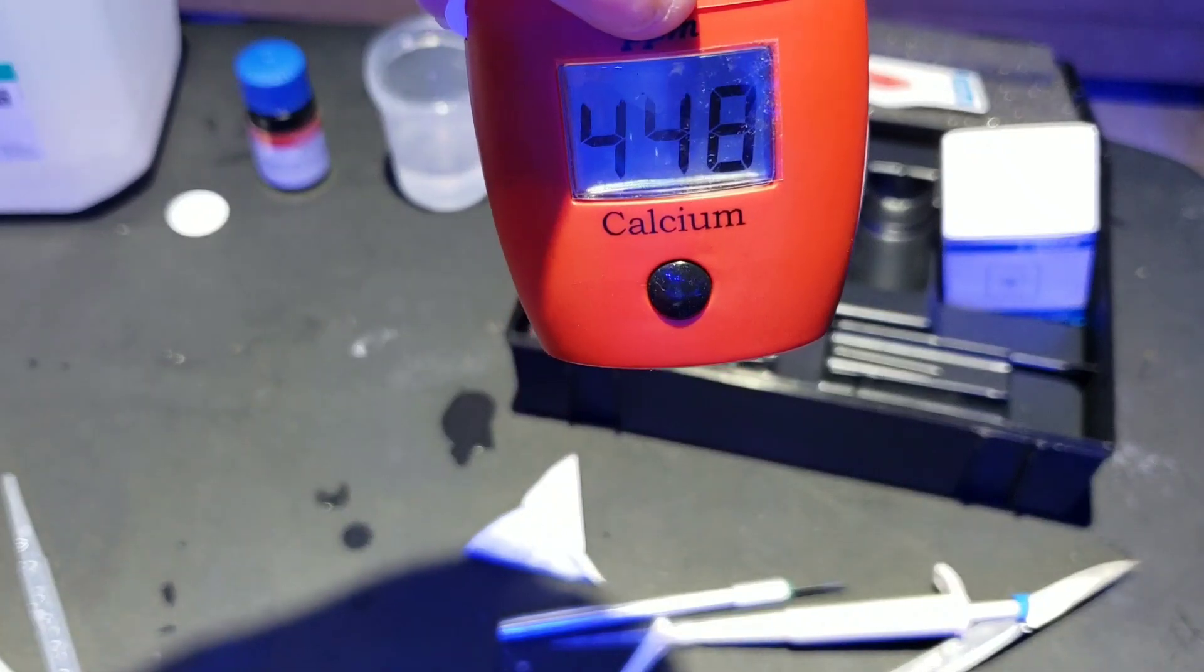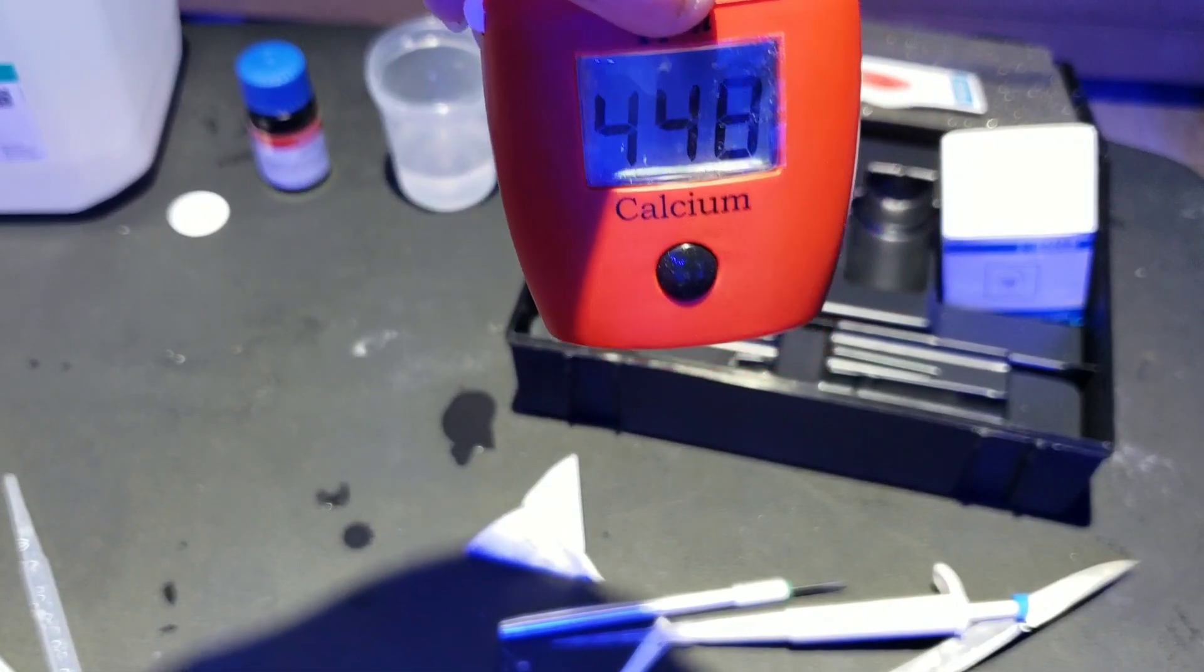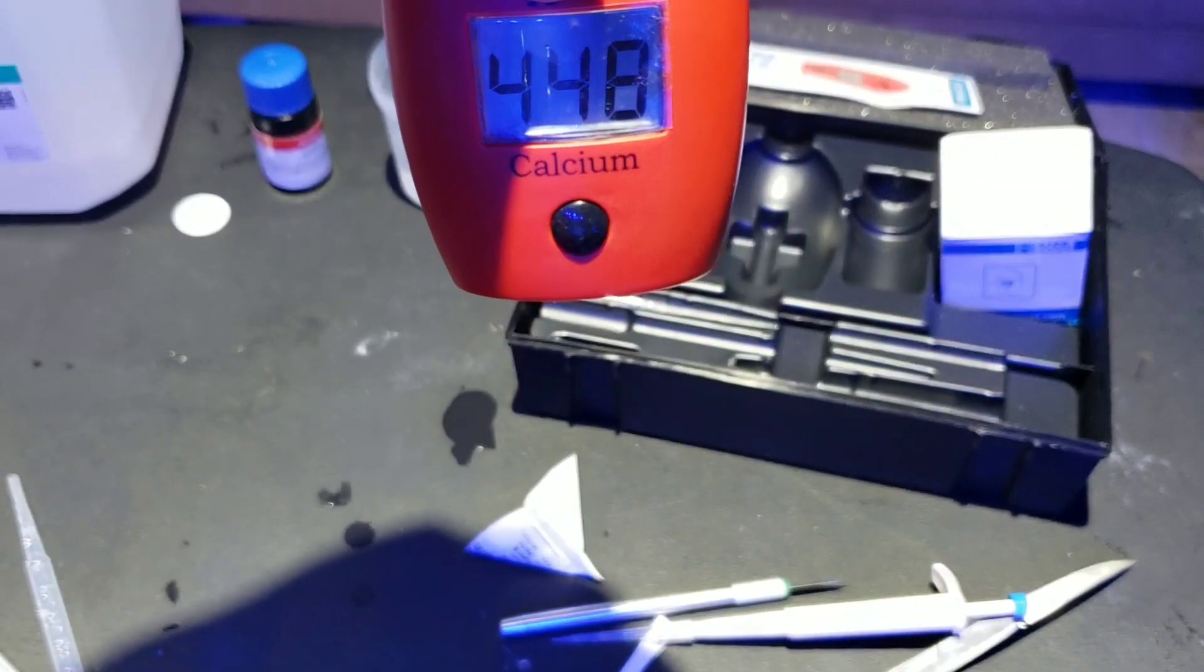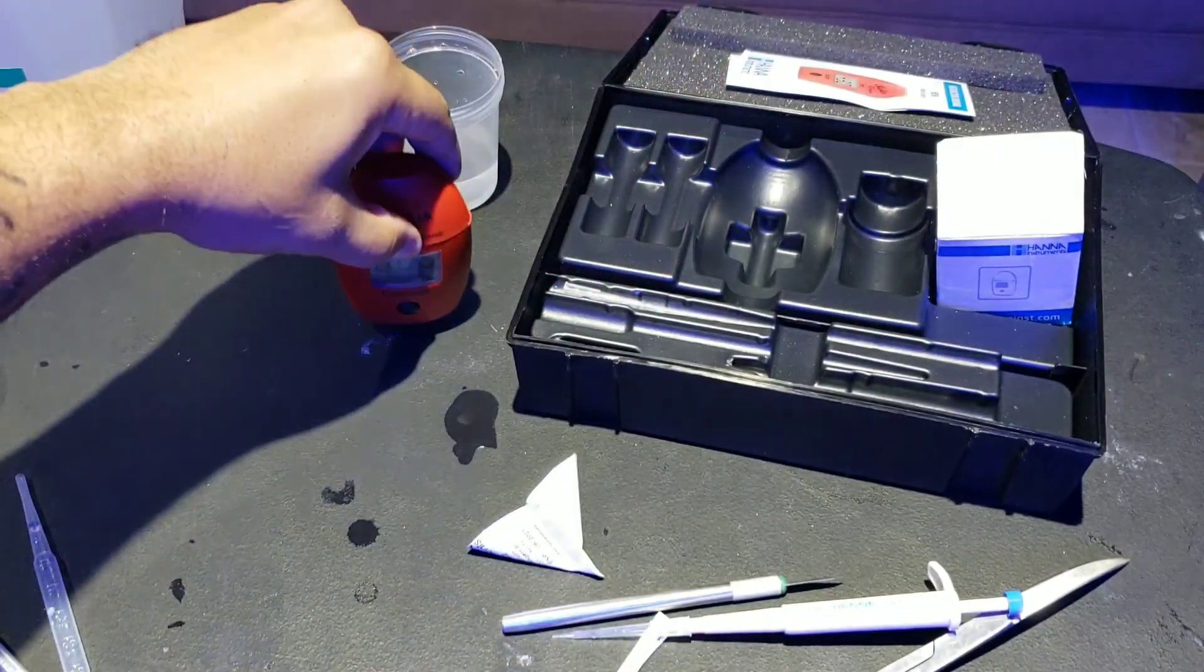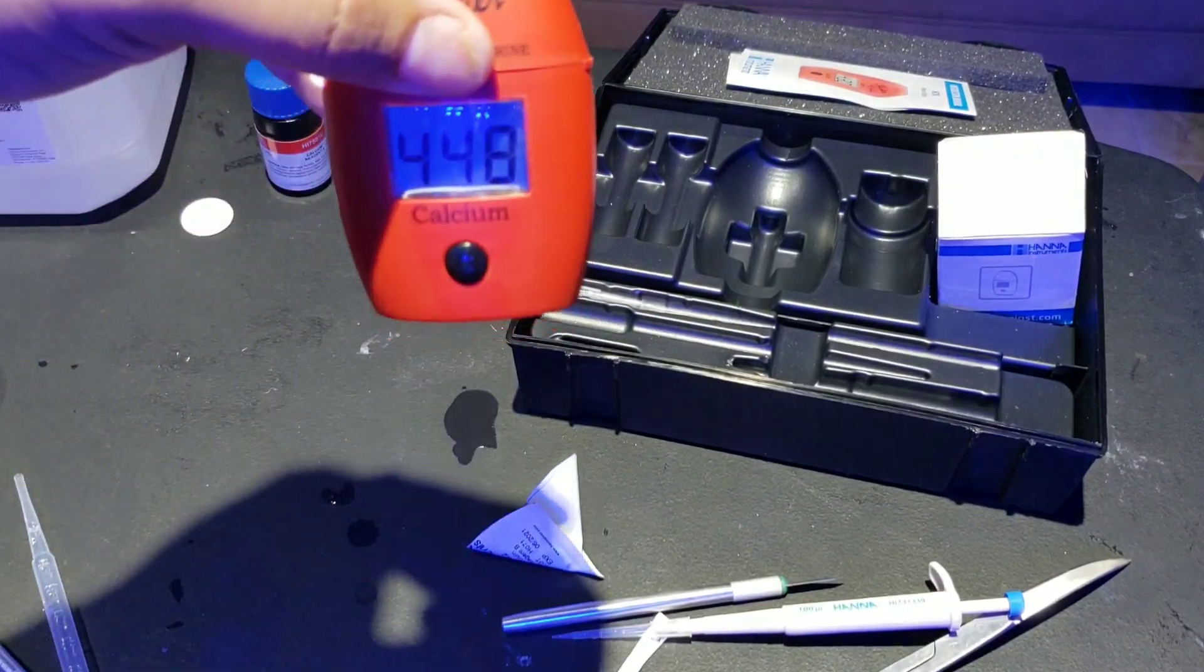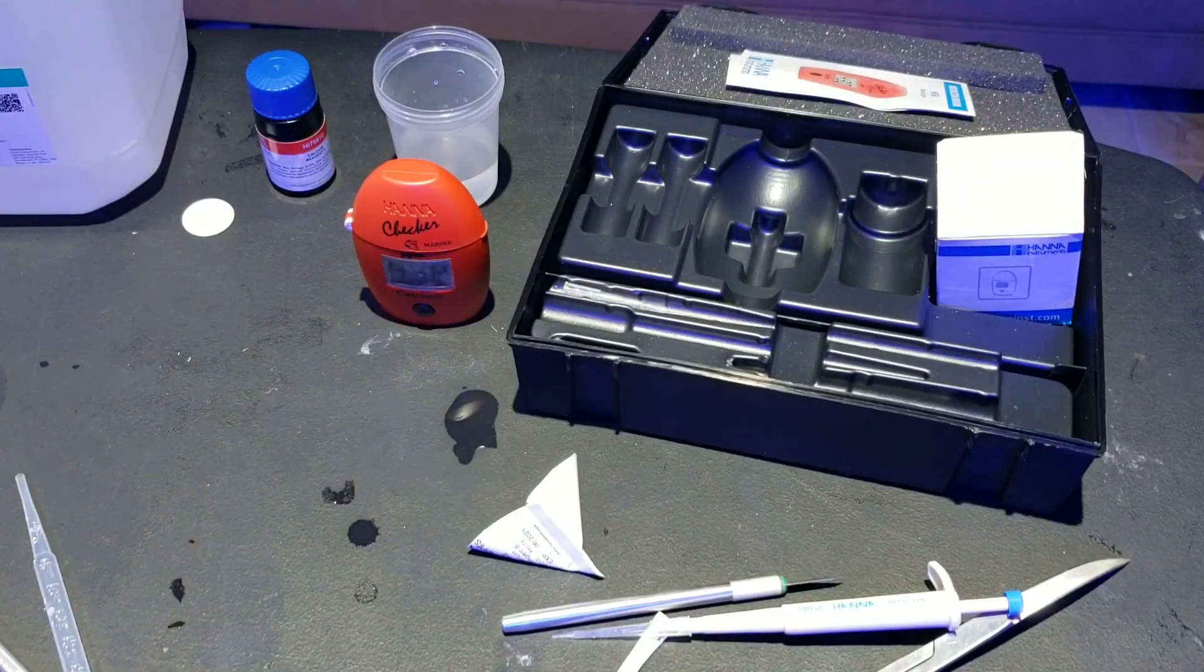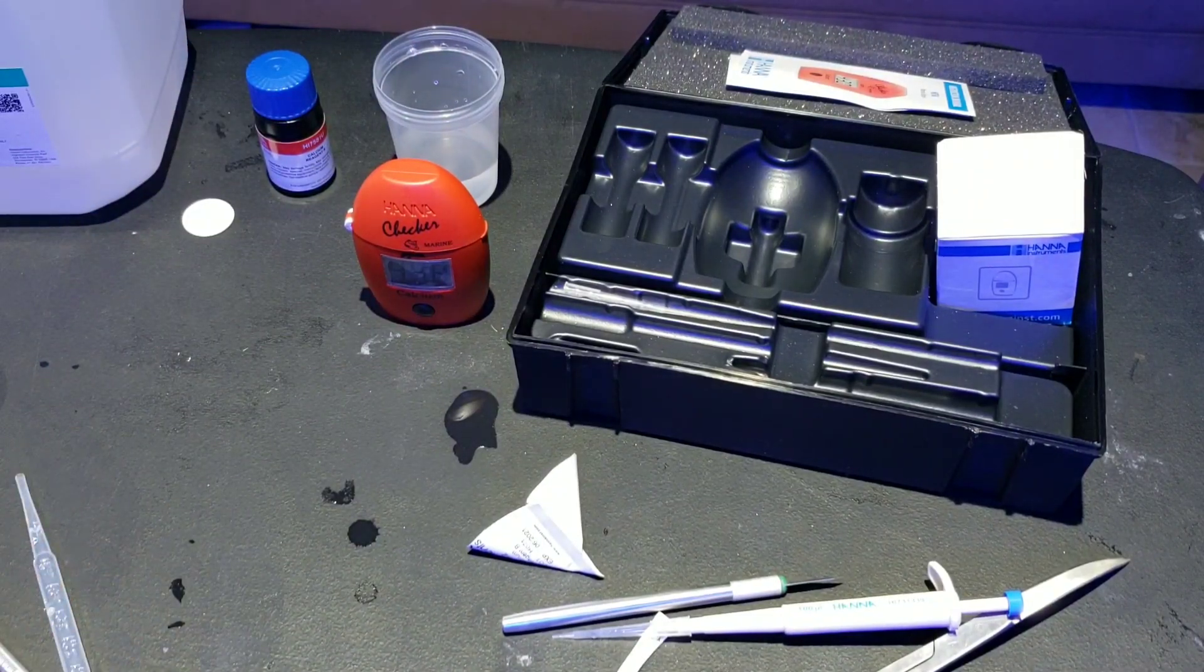Alright everyone. That is the proper way to do the testing. We got 480. Now, once this happened, I double checked this and I had 490. So this is the proper way of using the Hanna checker.